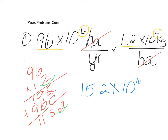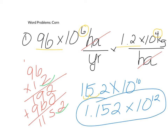This is not proper scientific notation yet, so we need to move our decimal point — one, two. Our answer becomes 1.152×10¹² kilograms. Again, if what I just did was confusing to you, you need to go back and do the scientific notation review.